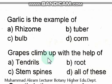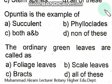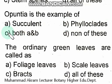Grapes climb up with the help of — the right option is tendrils. Grapes climb with the help of tendrils. Opuntia is an example of both succulent and phylloclade — option C, both A and B, is the right option.